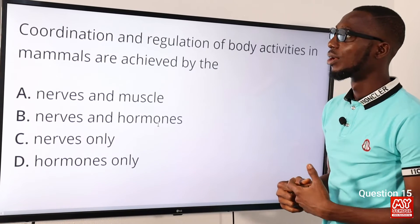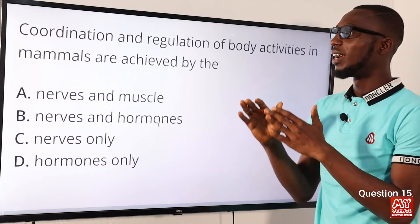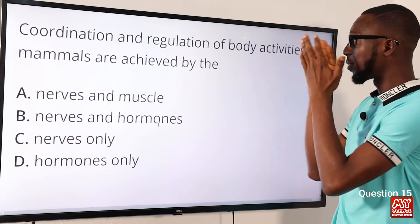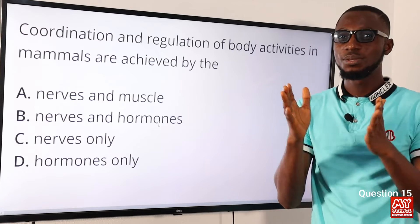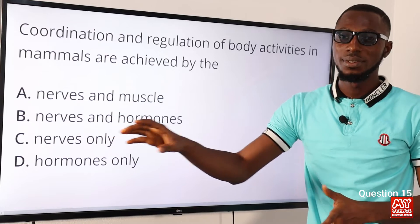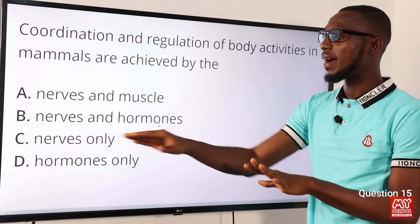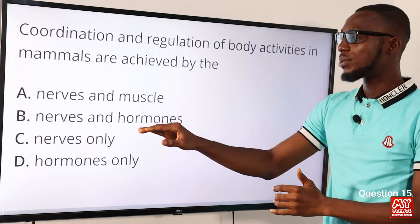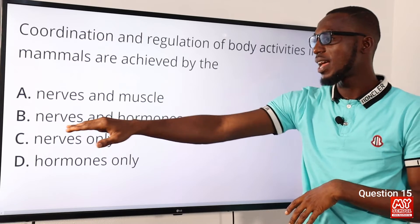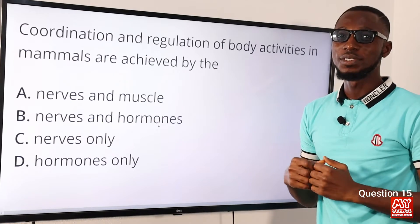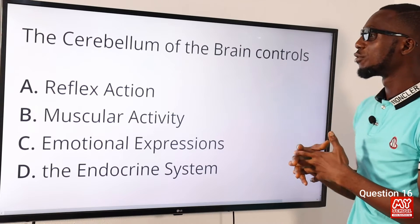Question fifteen: coordination and regulation of body activities in mammals are achieved by what? We're talking about the nervous system and the endocrine system. The link between them is the hypothalamus. The nervous system involves nerves; the endocrine system involves hormones via the circulatory system. So the correct combination is nerves and hormones — option B is the correct option.